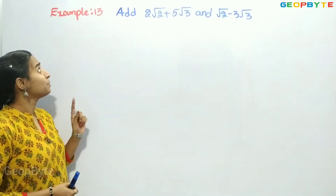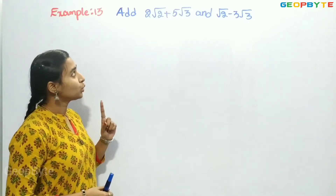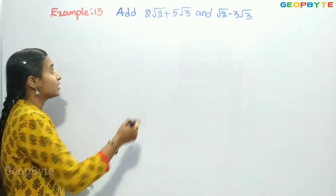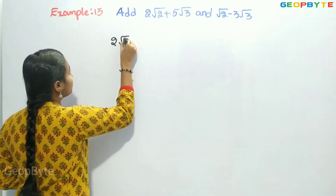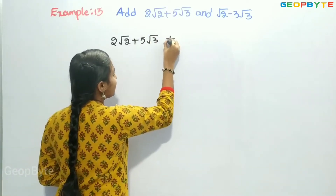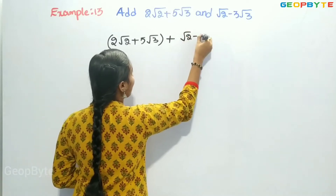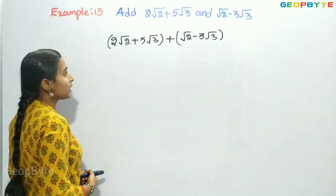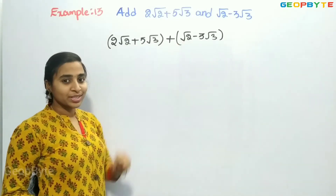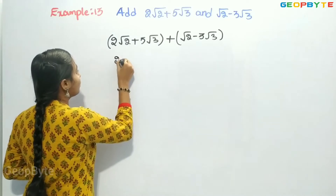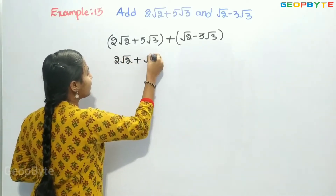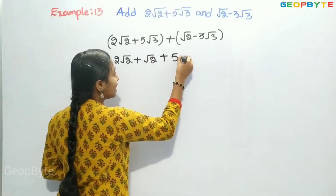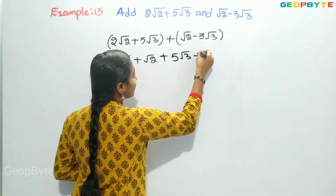Let us see example number 13: add 2 root 2 plus 5 root 3 and root 2 minus 3 root 3. We are given 2 root 2 plus 5 root 3 plus root 2 minus 3 root 3. Here, root 2 appears in two terms and root 3 appears in two terms, so let us group them.